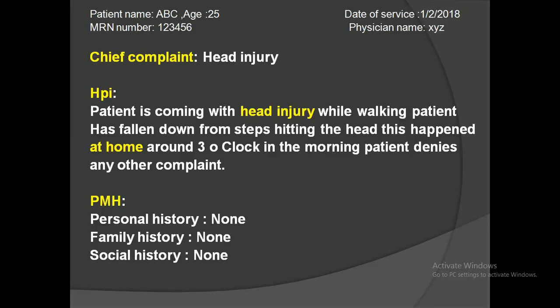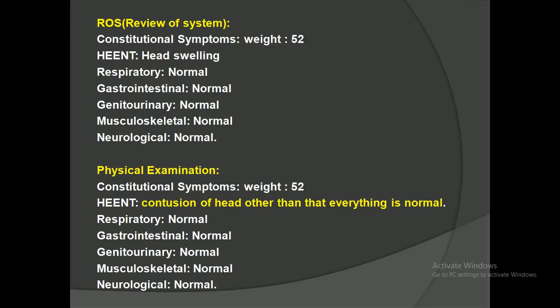Past medical history: none. Personal history: none. Family history: none. Social history: none. In the review of systems, constitutional, head and neck, respiratory, and gastrointestinal systems are reviewed. The patient mentions some head swelling in the head and neck section; all other systems are normal. Physical examination is performed by the physician across all systems.